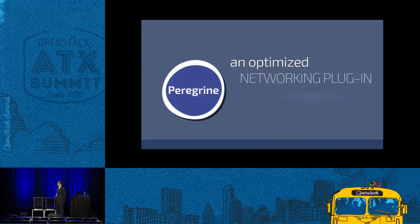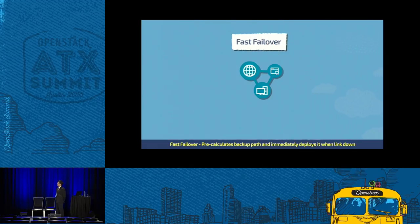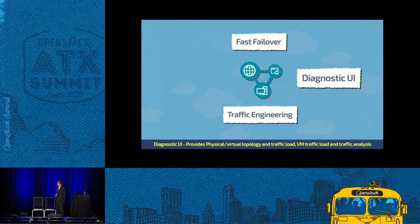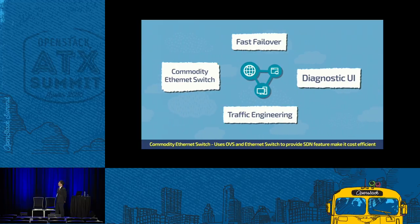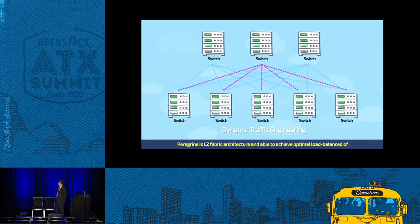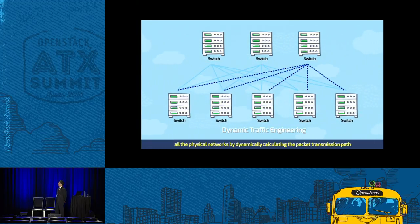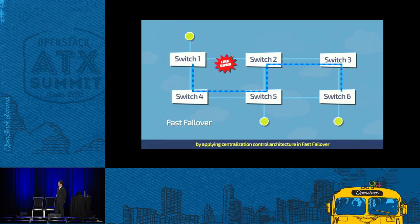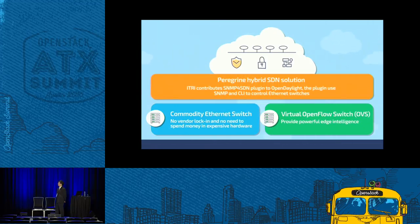Peregrine is our optimized networking plugin for Neutron. Fast Failover pre-calculates backup paths and immediately deploys them when a link is down. Traffic Engineering dynamically calculates the packet transmission path and balances the traffic load on each physical link. Diagnostic UI provides physical and virtual topology, traffic load, VM traffic load, and traffic analysis. Commodity Ethernet Switch uses OVS and Ethernet Switch to provide SDN features, making it cost efficient. Peregrine is an L2 fabric architecture able to achieve optimal load balance across all physical networks by dynamically calculating the packet transmission path, and can redeploy packet transmission paths when any links or devices have failed, using centralized control architecture for fast failover. Peregrine as a hybrid SDN solution supports commodity Ethernet switch and virtual OpenFlow switch.